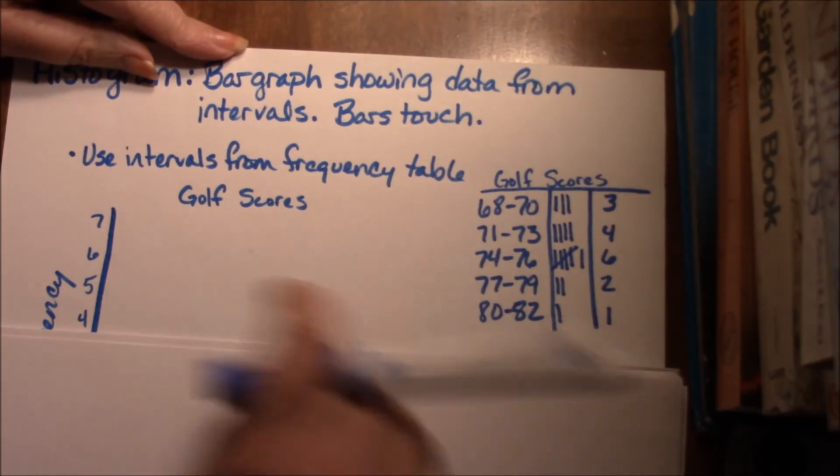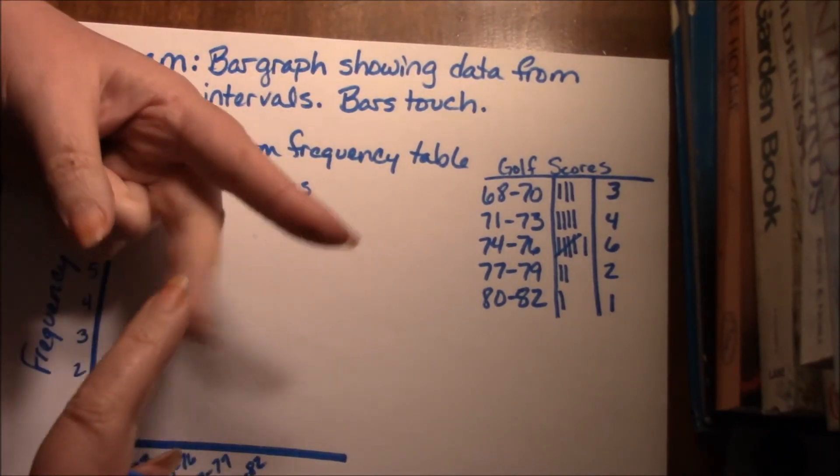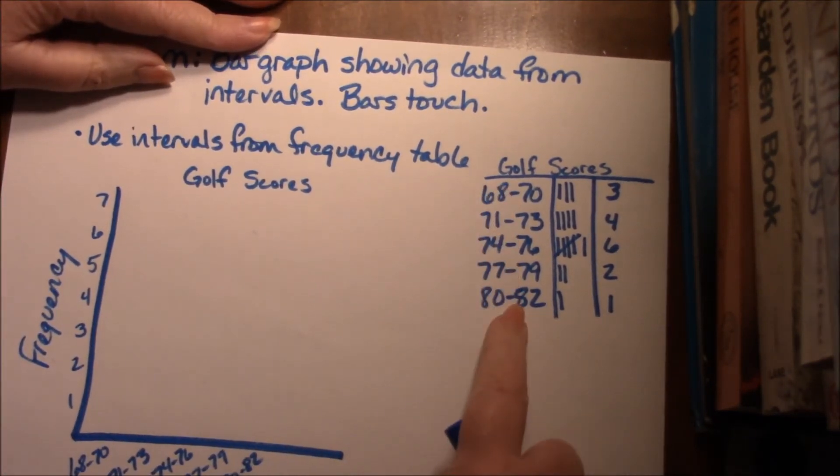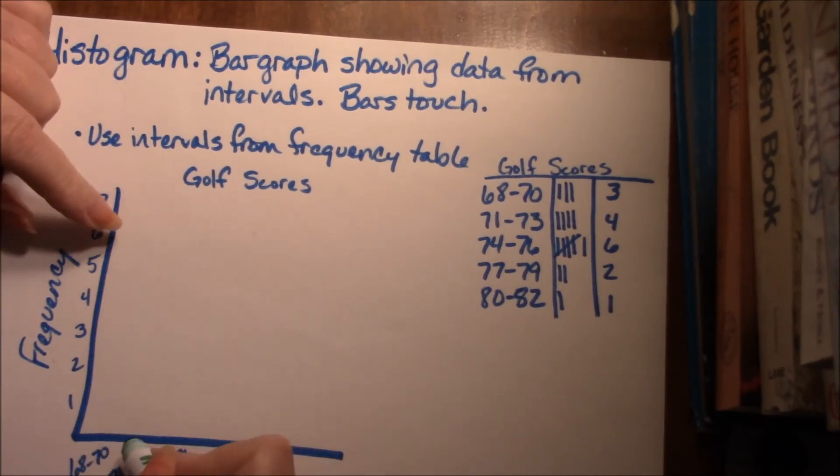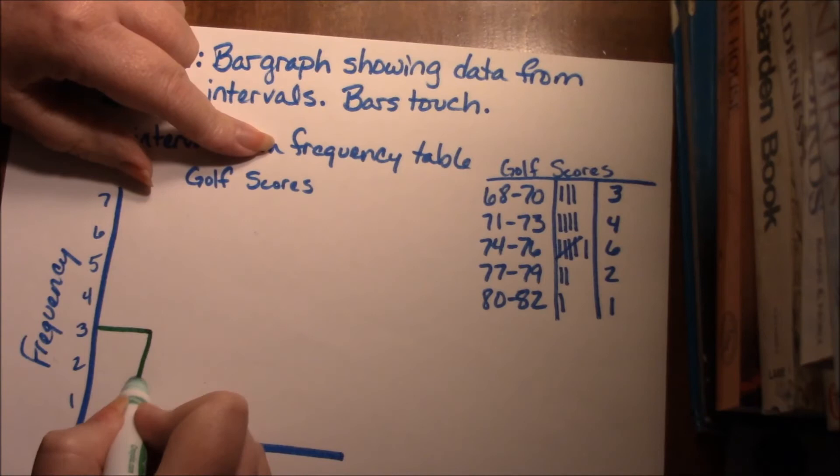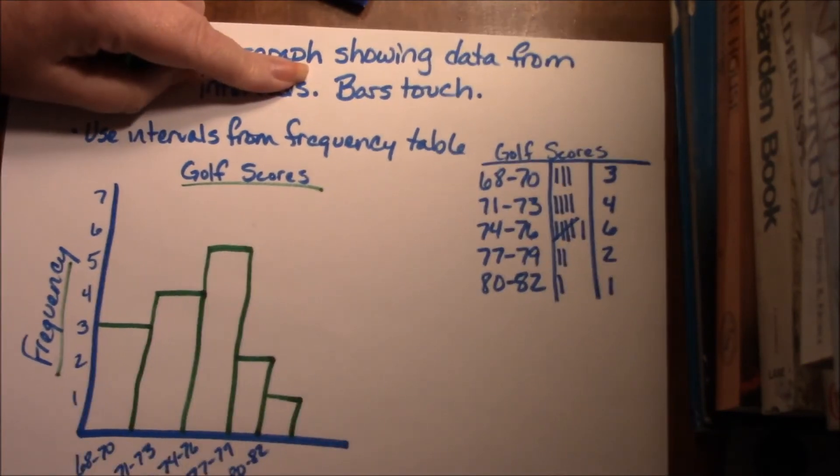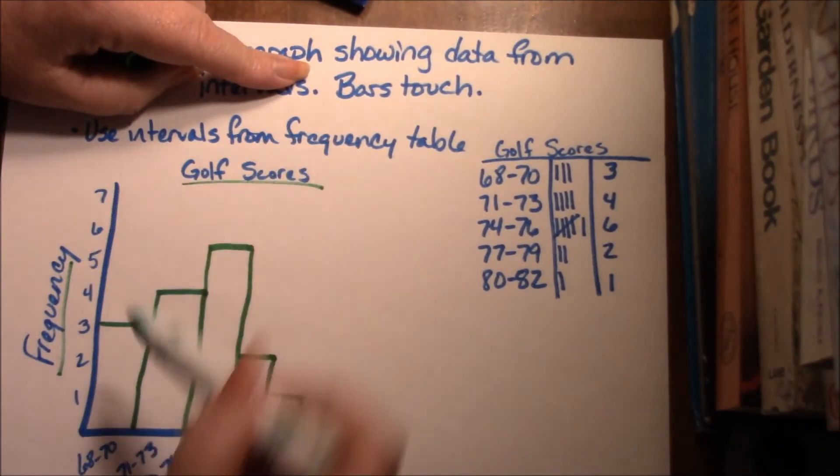So we're going to use the intervals from the frequency table and we're going to create a bar graph where the bars are the same width and they touch. The scores are going to be the same intervals here, and the frequency is going to go up the side. So we've got 68 to 70 is 3, so here's our first one. And that's a histogram. It's got a title, it's got a word on the side, it's got a word on the bottom, it's got regular intervals. They're all three, they're all whatever. Title, word, word, regular increments, regular increments.